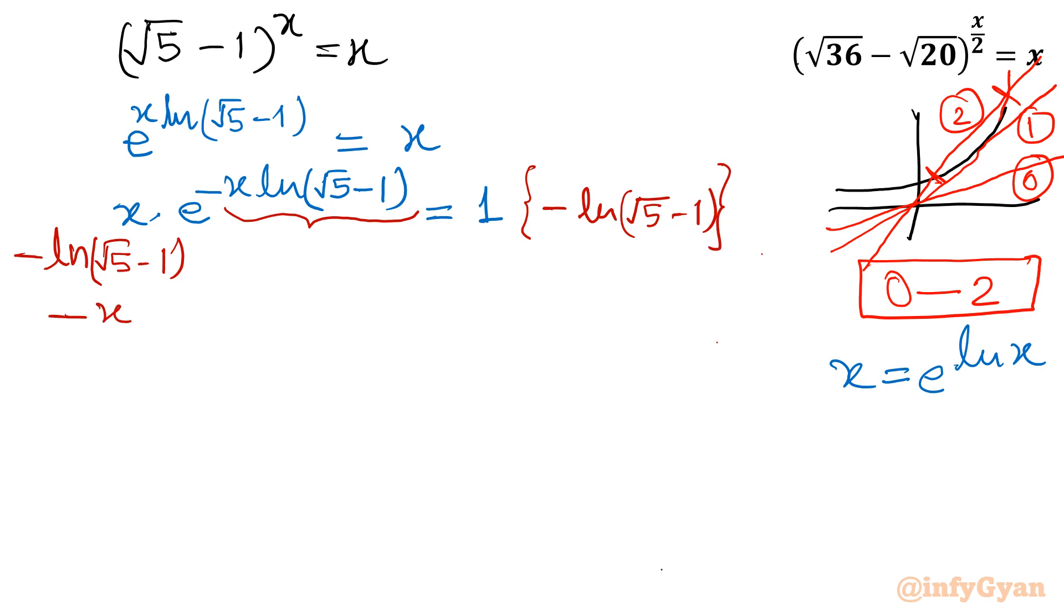So left hand side, now let me write one time: minus x ln root 5 minus 1 times e raised to the power minus x ln root 5 minus 1 equal to minus ln root 5 minus 1. Now you can easily see whatever is written here as a coefficient is the same as the exponent.